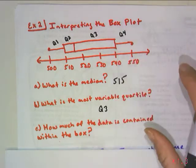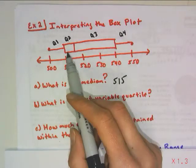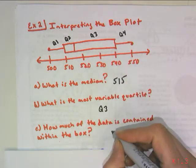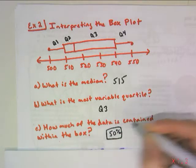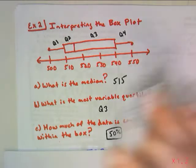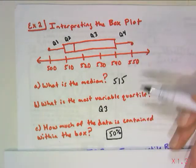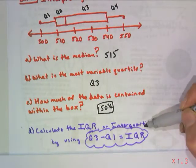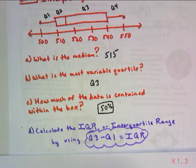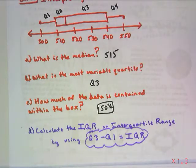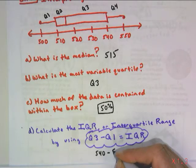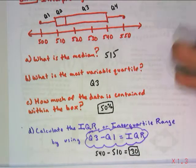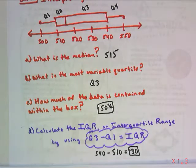But how much of the data is contained within the box? If Q2 and Q3 are both quarters, then if I look at the box as a whole, when I add the two quarters, 50% of your data, half of your data will be within the box. And likewise, half of your data is going to be in the whiskers. The last thing that you're going to do with the box and whisker is calculate what's called the IQR, which stands for the interquartile range. This is a formula. The interquartile range essentially is how big is your box. So you take the Q3 value and you subtract away the Q1 value. In our case, we have 540 minus 510 gives us an interquartile range of 30.